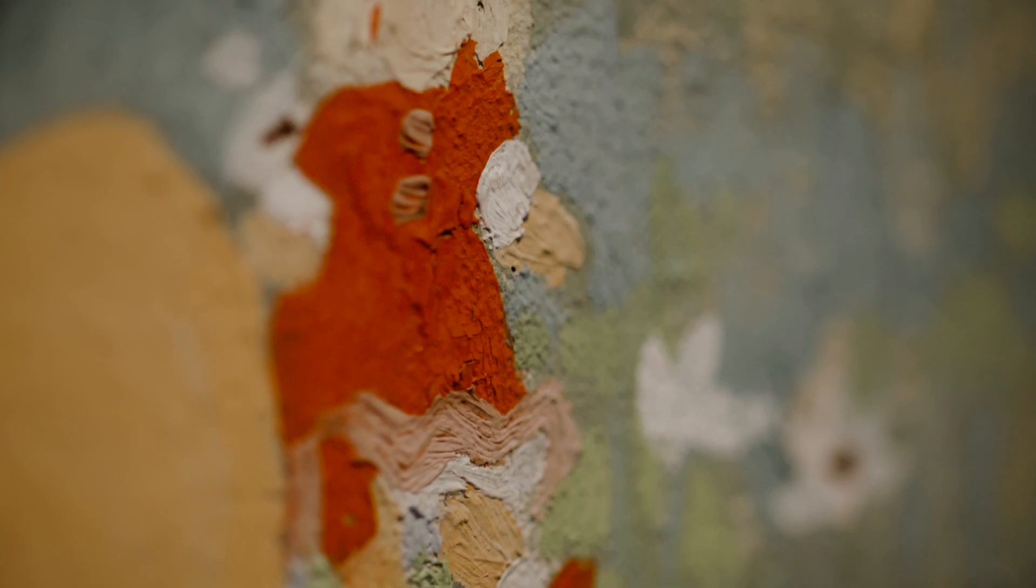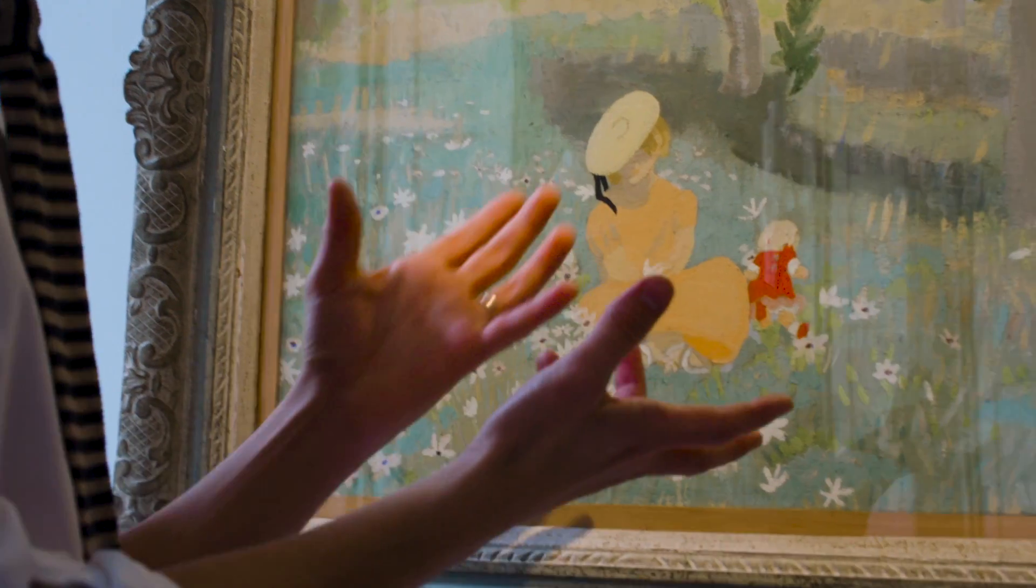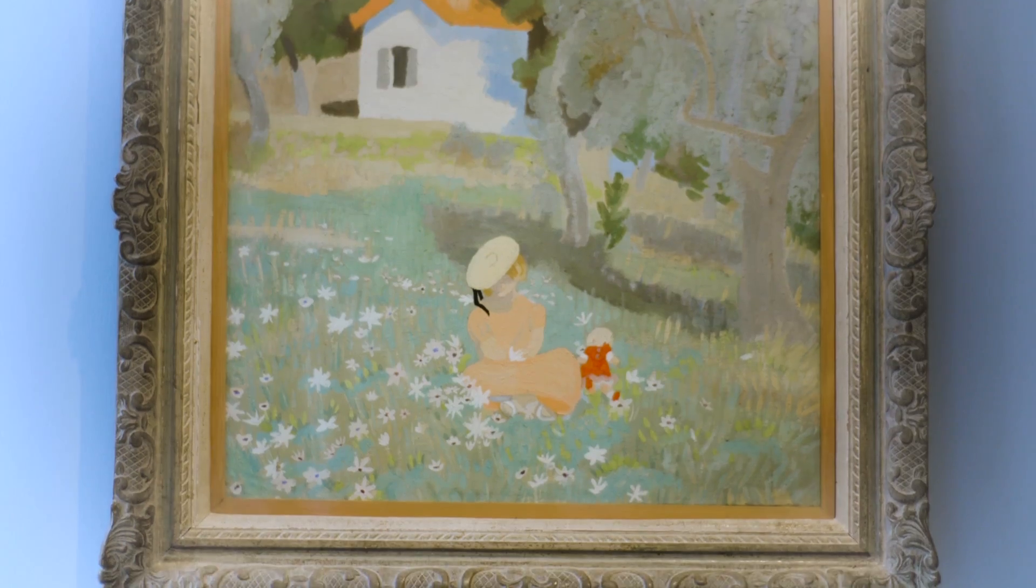Winifred Nicholson paints her daughter, Kate, in Alerta in the south of France. The palette is so beautifully crisp and soft. It shows Winifred's skill with colour.